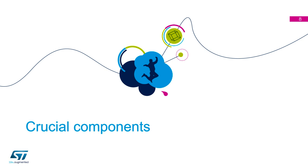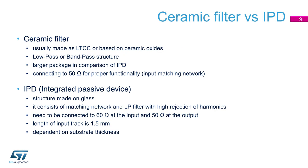In this part we will deal with crucial components of the RF system, their selection and correct placement. You can meet with two types of filters implemented in STN32WB boards. This information could help to select the right filter for your board. A ceramic filter is usually made as low temperature co-fired ceramics or based on ceramic oxides. The structure is low pass or band pass. The main feature is that spurious and harmonics have to be decreased. It has a larger package in comparison to the IPD filter we talk about shortly.